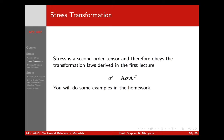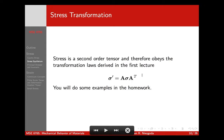We've established that stress is a second-order tensor, so it has to have all the properties that any other tensor has. That means it has to obey the transformation law. Sigma prime equals A sigma A transpose — or Q sigma Q transpose, or R sigma R transpose, whatever notation we use for the coordinate transformation matrix. Stress transforms like any other tensor.